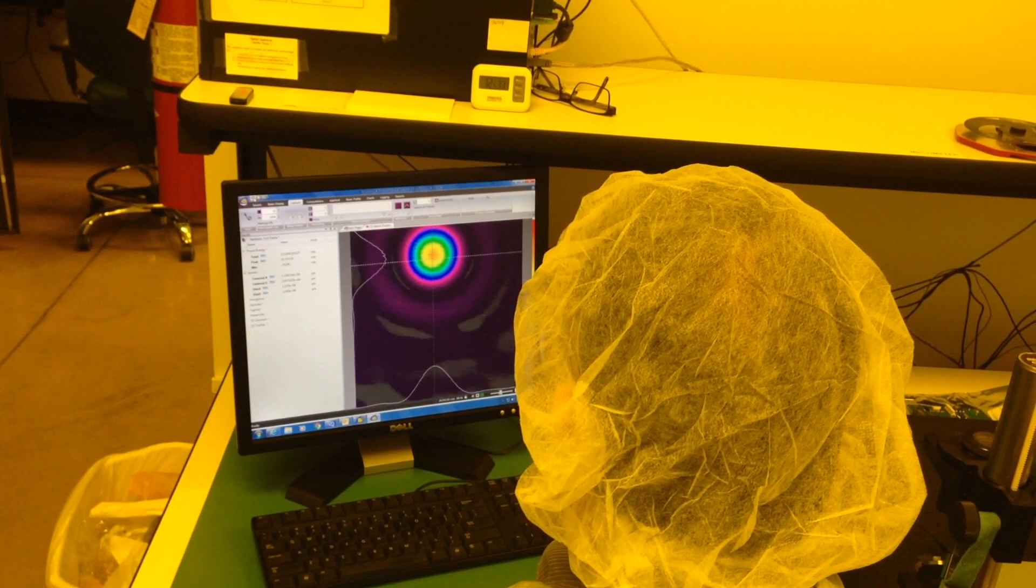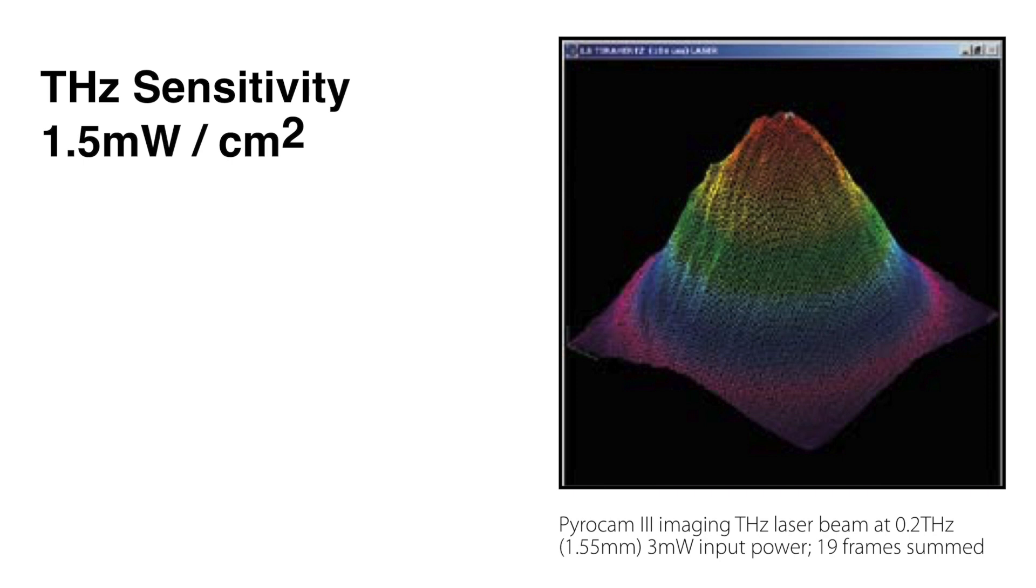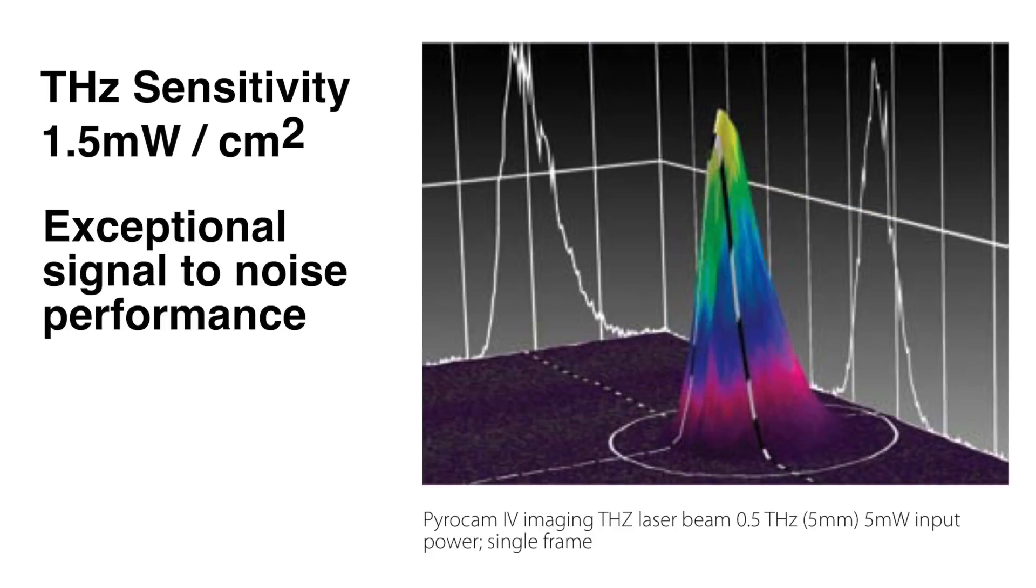For terahertz sources, the sensitivity of the PyroCam is relatively low, at about 1.5 milliwatts per centimeter squared at full output. With exceptional signal-to-noise performance, beams of 30 milliwatts per centimeter squared are easily visible.